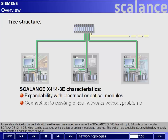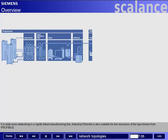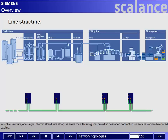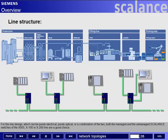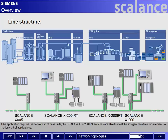For wide-area networking in a rigidly linked manufacturing line, industrial Ethernet is also suitable for line structures of the type known from PROFIBUS. In such a structure, one single Ethernet strand runs along the entire manufacturing line, providing cascaded connection via switches with reduced cabling. The nodal points can connect with single Ethernet stations or with a further star structure. For this line design — which can be purely electrical, purely optical, or a combination of the two — both the managed and the unmanaged Scalance switches of the X005, X100, or X200 line are a good choice. If the application requires the networking of drive units, the Scalance X200 IRT switches are able to meet the stringent real-time requirements of motion control applications.